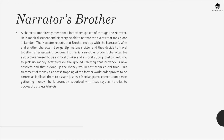The narrator's brother: A character not directly mentioned but rather spoken of through the narrator. He is a medical student and his story is used to narrate the events that took place in London. He is a sensible, prudent character who also proves himself to be a critical thinker and morally upright, refusing to pick up money scattered on the ground, realizing that currency is now obsolete and that picking it up would cost them crucial time. This treatment of money as a relic of the former world proves correct, as it allows them to escape just as a Martian patrol comes upon a man gathering money — who is promptly vaporized with heat rays.